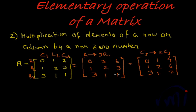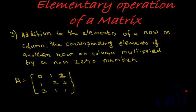Like the first operation, here also we can do consecutive elementary operations on the same matrix and arrive at different but equivalent forms. The third elementary operation says: addition to the elements of a row or column of the corresponding elements of another row or column multiplied by a non-zero number does not alter the nature of the matrix.